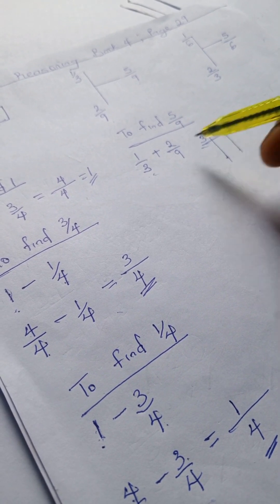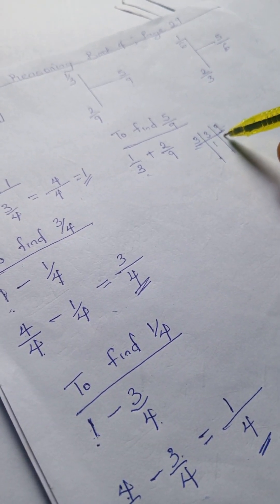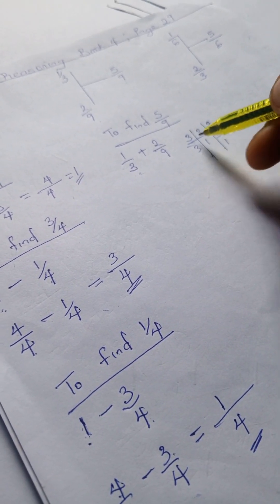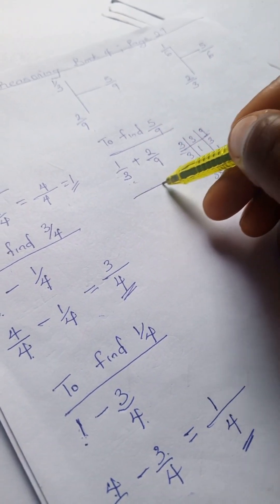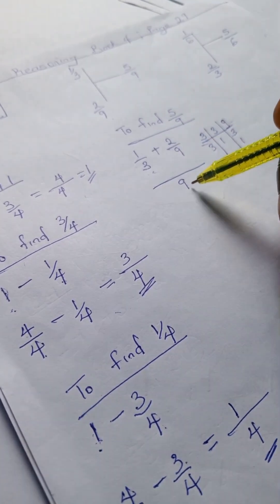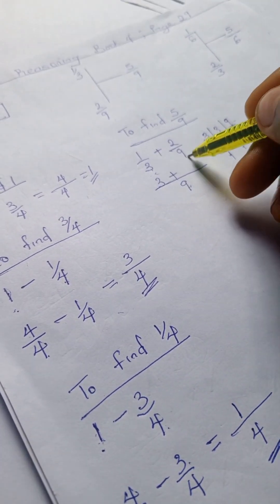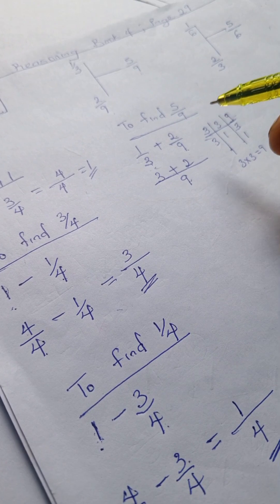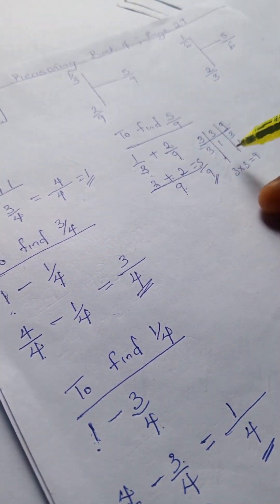Using the prime factor method, I'll use 3 to divide these numbers. 3 divides into 3 giving 1, and 3 divides into 9 giving 3. Then 3 divides into 3 again giving 1. Multiplying: 3 times 3 gives 9, so our LCM is 9. Now: 9 divided by 3 is 3, times 1 is 3; plus 9 divided by 9 is 1, times 2 is 2. So 3 plus 2 gives us 5, all over 9. That's why we have 5/9.